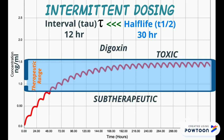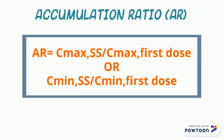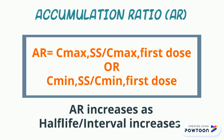Drugs with a long half-life compared with the dosing interval tau will accumulate with each dose until a steady-state equilibrium is reached, such that the amount of drug eliminated during each dosing interval equals the amount administered during that interval. The accumulation ratio describes the magnitude of increase of either C-max or C-min at steady state compared with the first dose. The longer the half-life compared with the dosing interval, the greater the accumulation ratio.